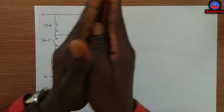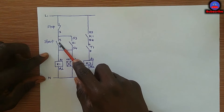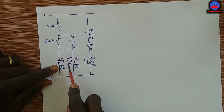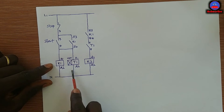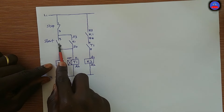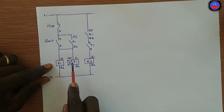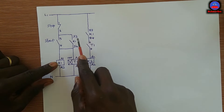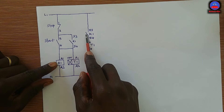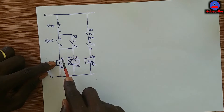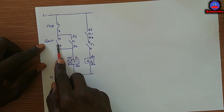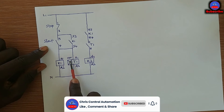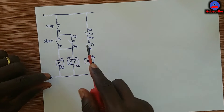Now let me explain the circuit in detail. When the start push button is pressed, K1 and T1 — Contactor 1 and the timer — both energize at the same time. The line closes and they both energize simultaneously. When K1 energizes, its contacts close, and this contact serves as a hold-on contact for K1, so that when I remove my hand, the contactor stays energized and keeps the current flowing.